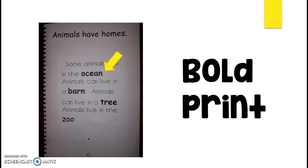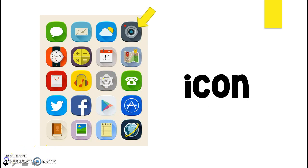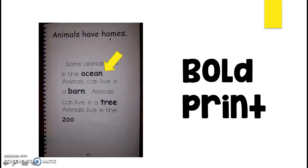Bold print. When you're reading and you're looking at the print, sometimes you'll come across really dark words. Those dark words are in bold print. Bold print helps the reader to know what the most important words are on that page. This one, for example, says some animals live in the ocean. Animals can live in a barn. Animals can live in a tree. Animals live in the zoo. Now the heading tells me animals have homes. So if I just looked at just the bold print, ocean, barn, tree, zoo, hey, that must be where the animals can live. Bold print helps to highlight or pop out words that are important for the reader.